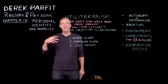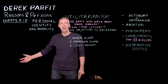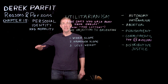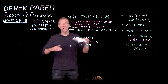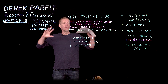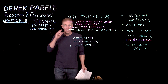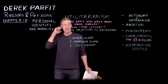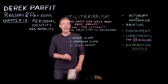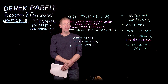Parfit is defending a consequentialist theory which looks a lot like utilitarianism. Consequentialism says that what makes an action or a policy right or wrong depends on the consequences that it brings about. So did I do the right thing? Well, it depends whether or not you brought about a good result or a good consequence — hence consequentialism.